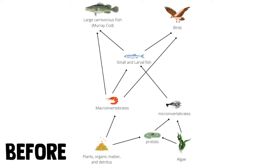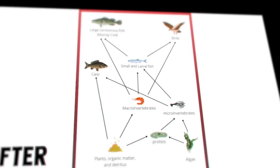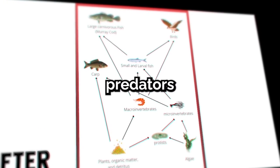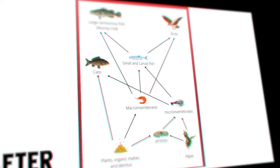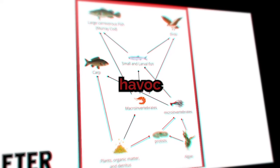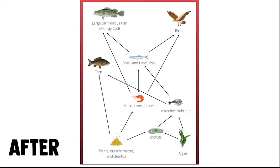Carp largely feed on plants and organic matter. Normally this would not be a problem; however, the fact that they have no predators has a huge impact on the food web. Carp churn up the sediment and wreak havoc on waterways, eating vegetation and therefore depleting natural populations, which goes up the food web to affect everything.